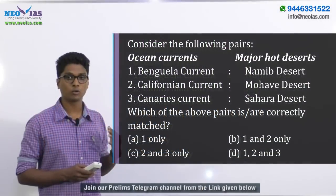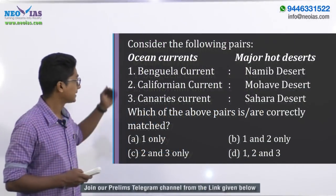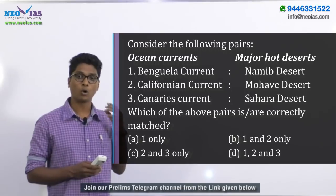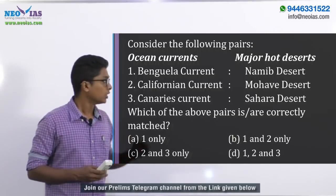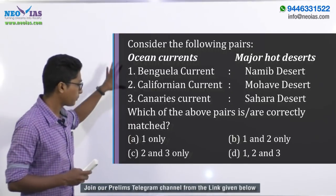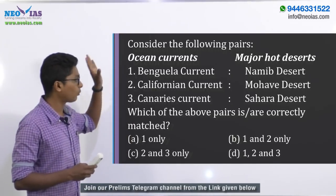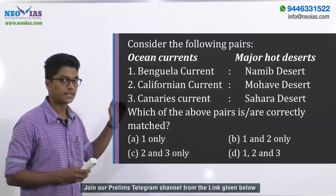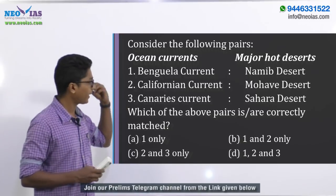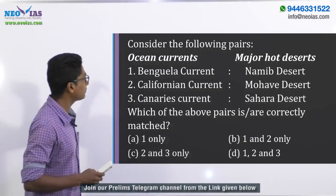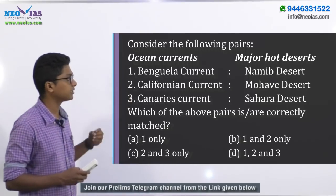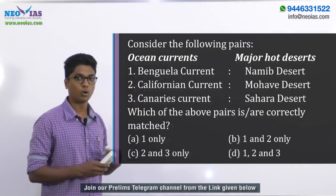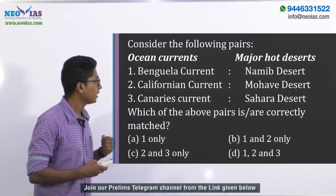Today's model question is regarding ocean currents and hot deserts. This is a pair type of question where we have been given ocean currents and we have to find out which of these ocean currents influence the formation of hot deserts.